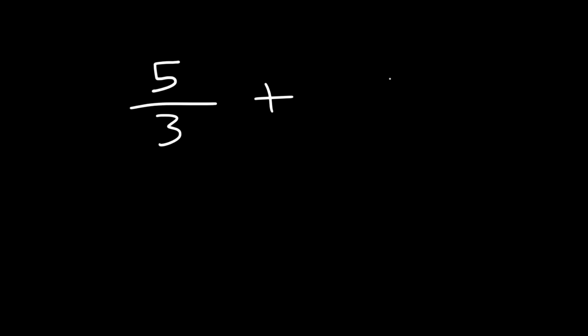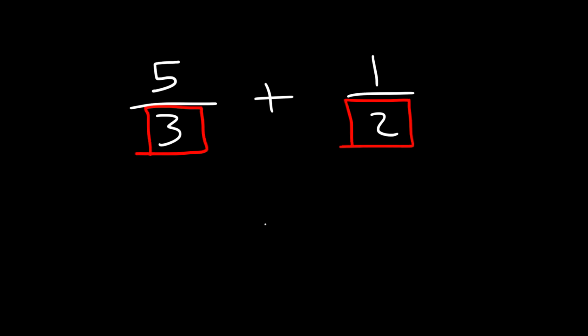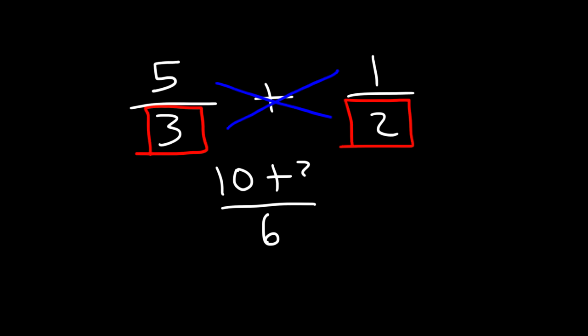Now let's try another example: 5 over 3 plus 1 over 2. Let's follow the same technique. 3 times 2 is 6. Then cross multiply: 5 times 2 is 10, and 3 times 1 is 3. We're going to add 10 plus 3 — that's 13. So the answer is 13 over 6.